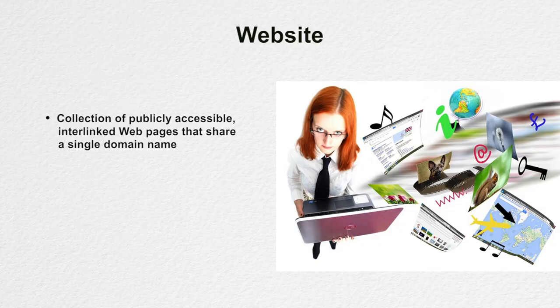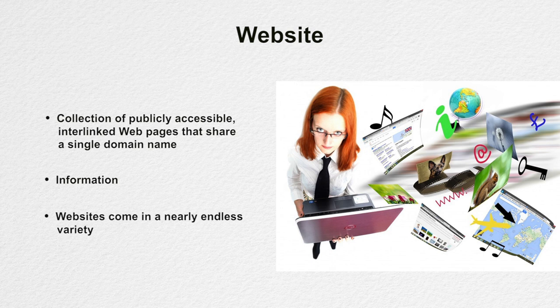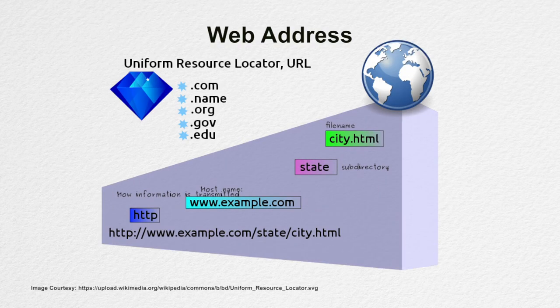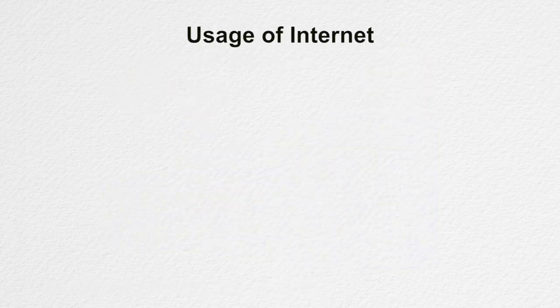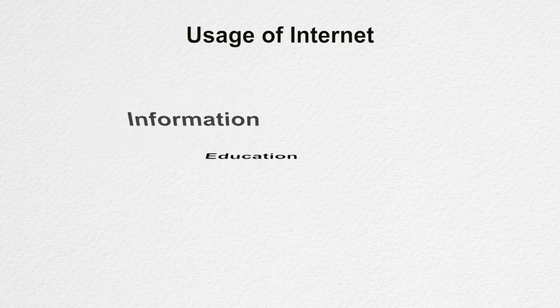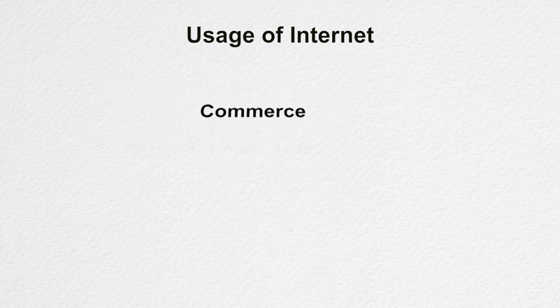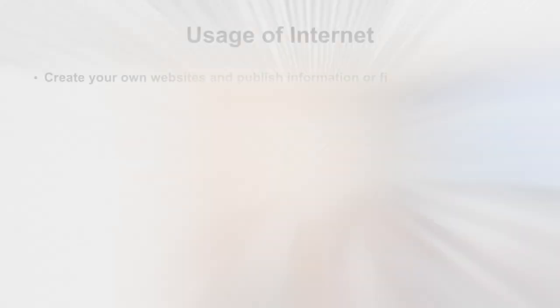A website contains one to millions of interconnected pages and has hyperlinks to help you find your way around. You can find different kinds of information on the web like games, health matters, holiday destinations, train timetables, weather forecasts, and many more. There are millions of websites available on the internet. Each website has its own unique address called a URL or Uniform Resource Locator. To visit a site, you need to type its address in the address bar of your web browser. The internet is used mainly for communication, to gather information, education, entertainment, current affairs, online learning, commerce, publishing, etc. In publishing, not just organizations or businesses — anyone can create their own website and publish their information or files on the world wide web.